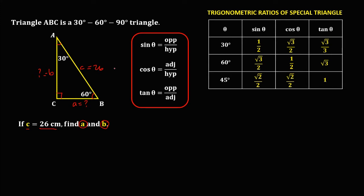Using 60 degrees as the angle, this side is the opposite, this side is the hypotenuse, and this side is the adjacent. To solve for side A, since side A is the adjacent and the given side is the hypotenuse, adjacent over hypotenuse is cosine theta, and theta equals 60 degrees. So we have cosine 60 degrees equals A over 26. In the trigonometric ratios of special triangles, cosine 60 degrees equals 1/2.